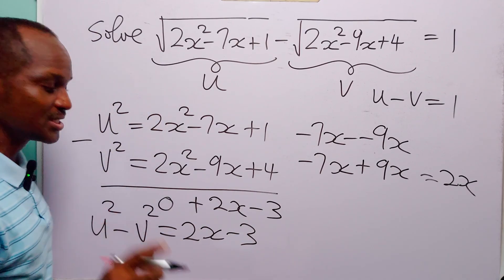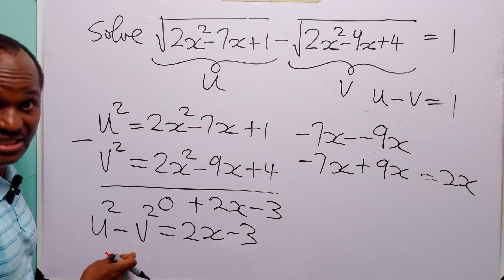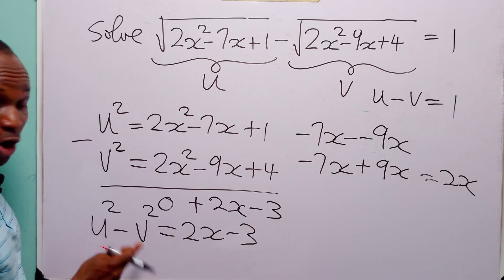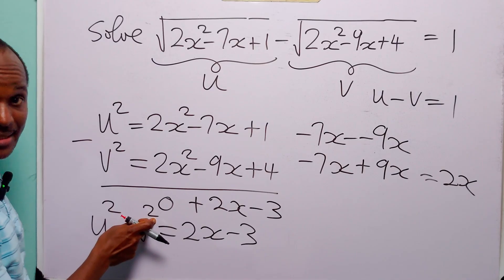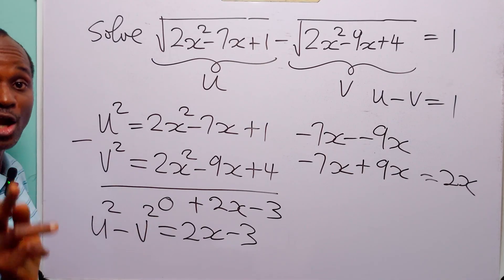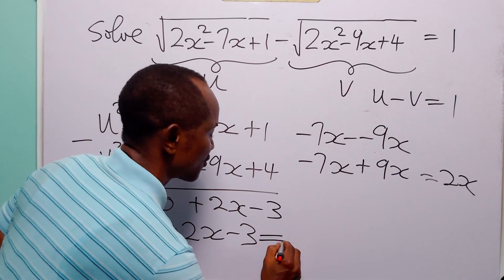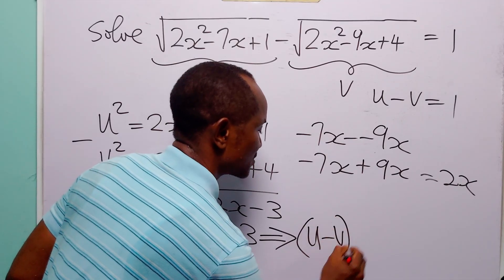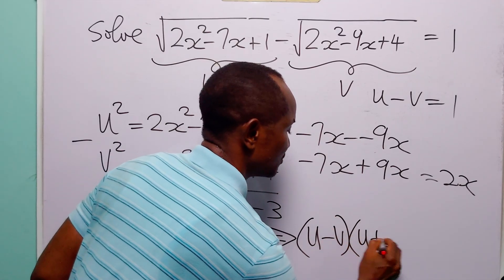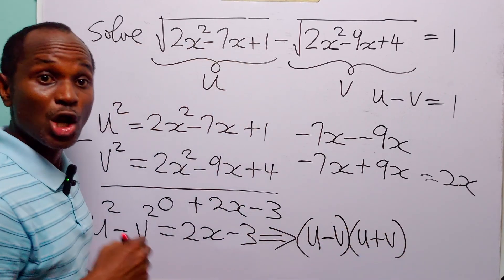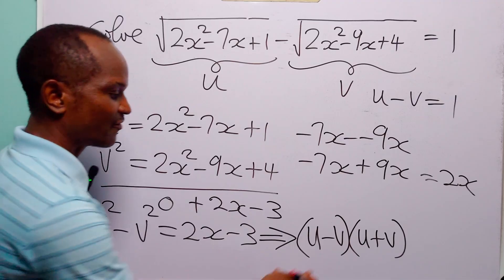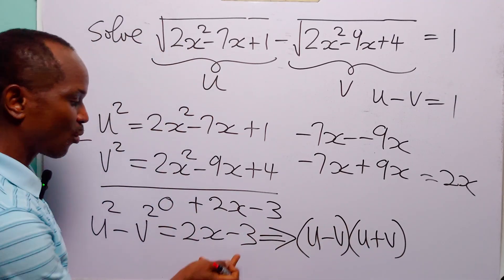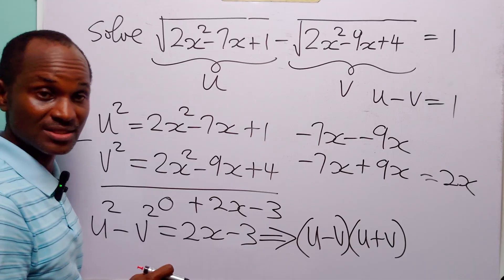But notice that on the left-hand side of this equation, we have the difference of 2 squares. And remember that the difference of 2 squares can be factorized as u minus v multiplied by u plus v. So we now have that u minus v times u plus v is equal to 2x minus 3.